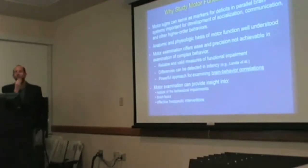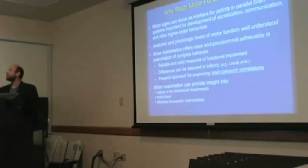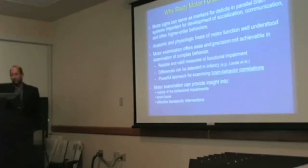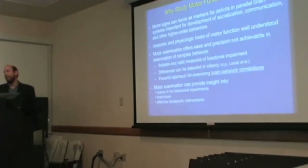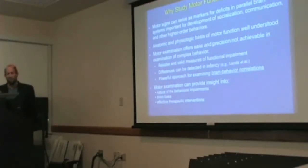The question can be raised: why study motor function in autism when the core features are social and communicative impairments? Motor signs can serve as markers for deficits in parallel brain systems important for the development of socialization, communication, and other higher-order behaviors. The anatomic and physiologic basis of motor function is much better understood than the neurologic basis of more complex behavior — there's an ease and precision not achievable with more complex behavior — so it gives us a window into understanding the neurologic basis of autism and points to potential therapeutic interventions.